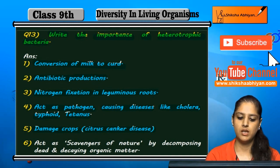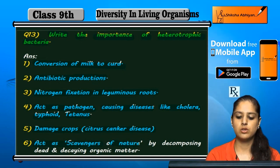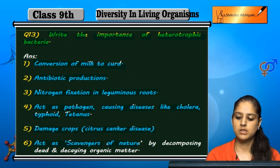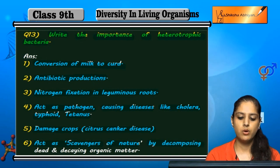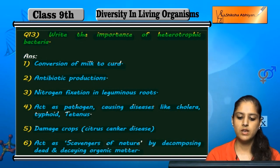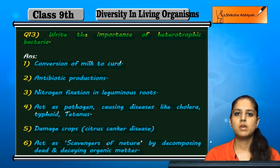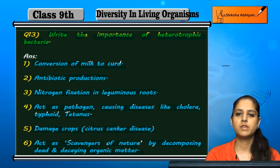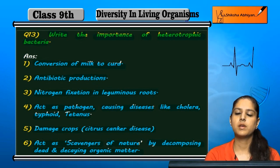In crops, citrus is a disease due to this heterotrophic bacteria. They act as scavengers of nature — scavenger means those organisms that feed on dead and decaying matter. It decomposes dead and decaying organic matter in nature. So these are the important features of heterotrophic bacteria.